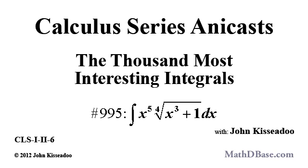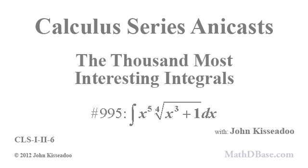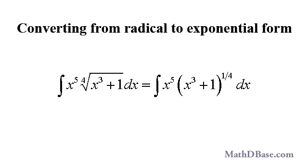So let's continue with interesting integral number 995. First, let's rewrite the radical in exponential form, so that the fourth root of the quantity x cubed plus 1 will become the quantity x cubed plus 1 raised to the one-fourth power.